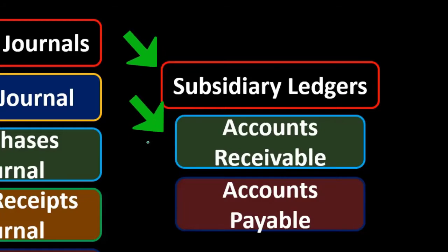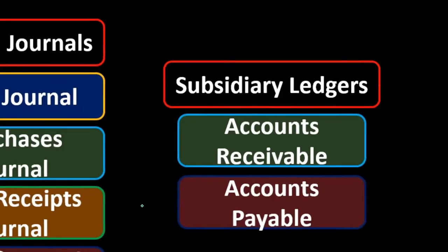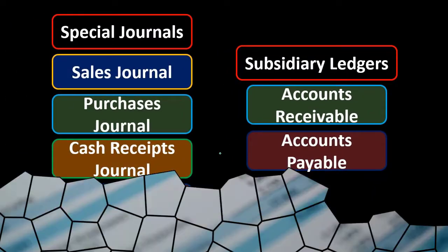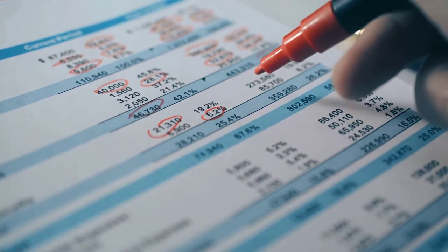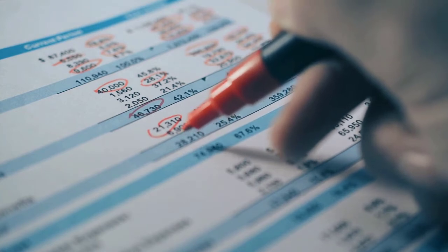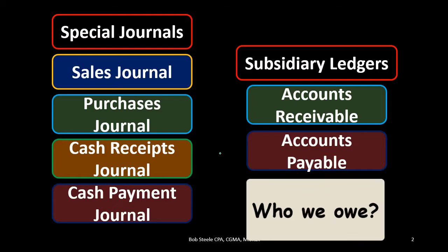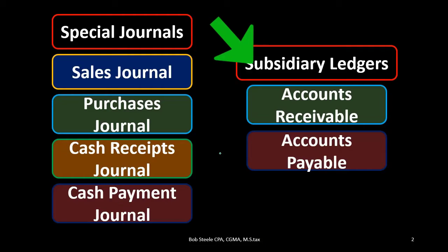We'll call that an accounts receivable subsidiary ledger. A similar story can be made for accounts payable — accounts payable represents who we owe money to, but the amount on the balance sheet doesn't tell us much more detail than how much we owe to somebody. If we want to know more detail, we can go to the general ledger, which will give us detail by date and the order of transactions that made up that amount on the balance sheet. But we also want to see it by who we owe — we'll call that by vendor. So those are going to be the subsidiary ledgers.